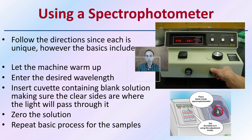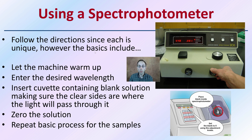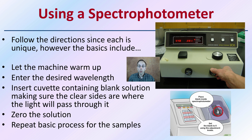When using the spectrophotometer, follow the directions since each machine is unique. However, the basics that apply to all of them are: let the machine warm up — this can be a short or long duration, so allow sufficient time. Enter the desired wavelength you're going to be studying. Insert the cuvette containing a blank solution, making sure the clear sides are where the light is passing through — you don't want to insert it the wrong way. Then zero that solution.